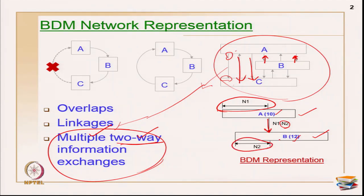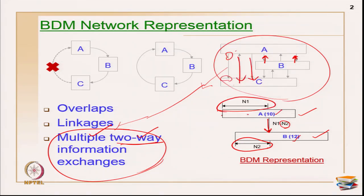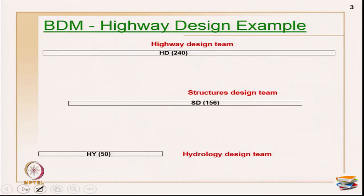N1 is primarily the time from the predecessor at which the information can be released, and N2 actually represents the time at which the information is received by the successor. That is how the information is represented as a linkage. So N1–N2 is a linkage and it shows: from the start of activity A, what is the time it takes to release linkage P1? And the same parameter P1 is required by B at the time called N2. That is how the BDM representation goes.